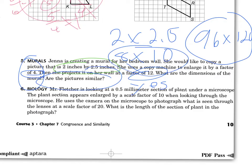The Mr. Fletcher problem down here, same idea. 0.5 millimeter section of a plant. Then he enlarges it by a scale factor of 10, which turns it into 5 millimeters. Then he uses the camera on the microscope to photograph at a scale factor of 20. So 5 times 20 is 100. And then the length of the section of the plant in the photograph is 100. Make sure we get that unit, please. Millimeters.